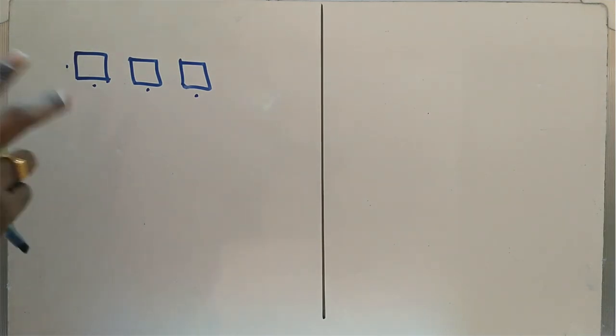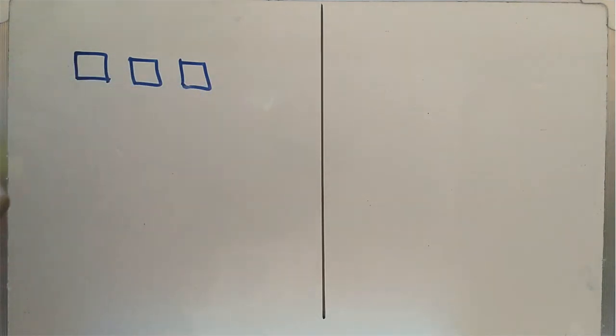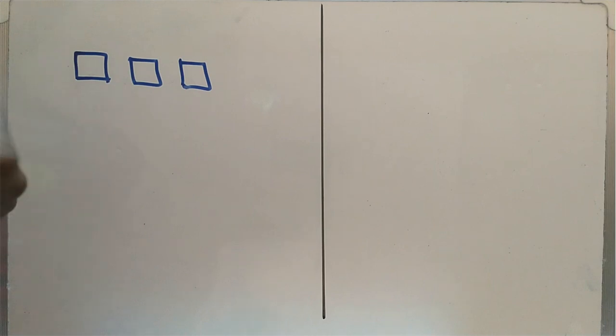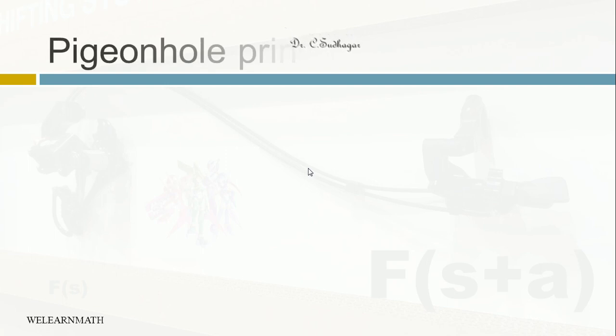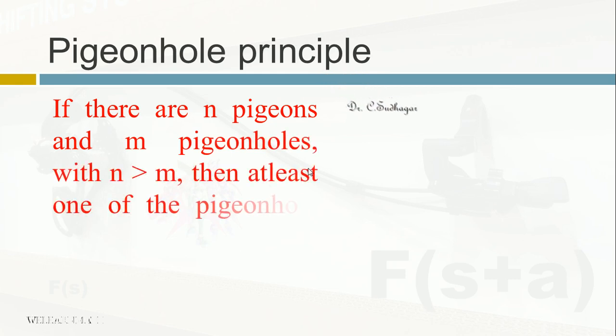This principle is generalized as pigeon hole principle. Now assume this as a pigeon hole. It's a place where the pigeons will live, and pigeons is a bird, you know that. If the pigeons are more than the pigeon holes, then at least one of the pigeon hole will have ⌊(n-1)/m⌋ + 1 pigeons.